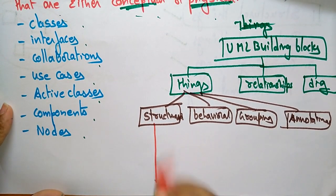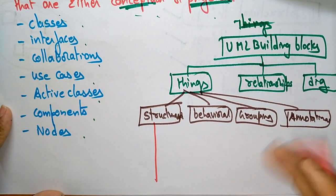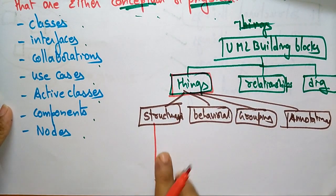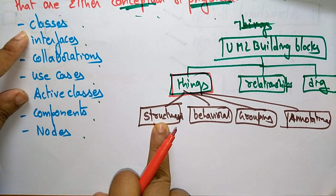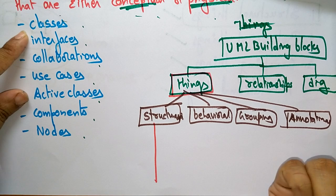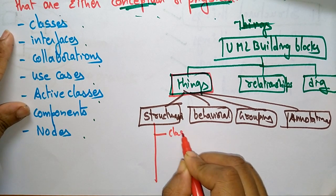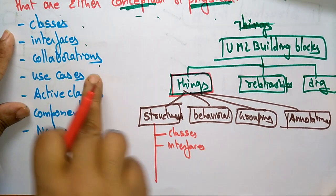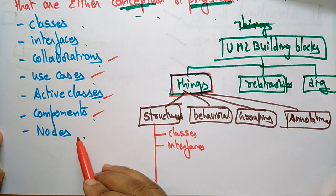So we are starting here with structural things. After completion of structural, I will explain behavioral, then grouping, then notational. Structural things are nothing but a static part of a model representing elements that are either conceptual or physical. Those elements are classes, interfaces, collaborations, use cases, active classes, components, and nodes.